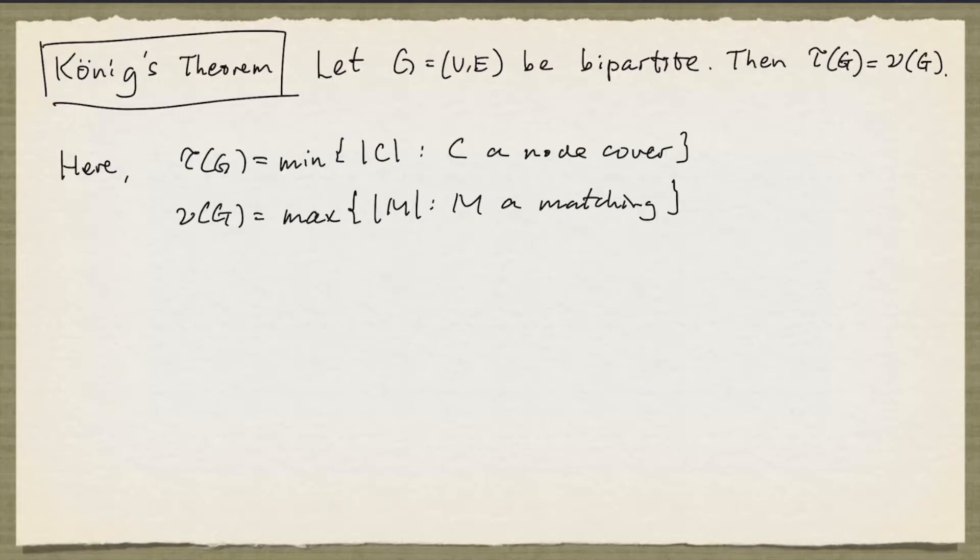So Koenig's theorem states that if G is a bipartite graph, then τ(G) equals ν(G). Here τ(G) denotes the minimum possible cardinality of a node cover, and ν(G) denotes the maximum possible cardinality of a matching.